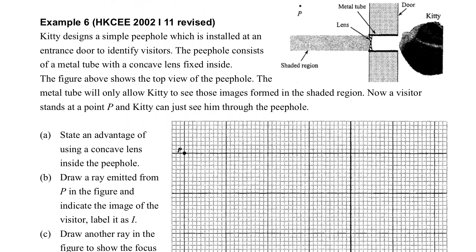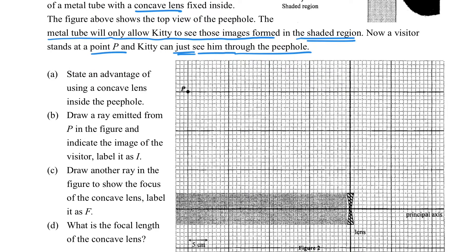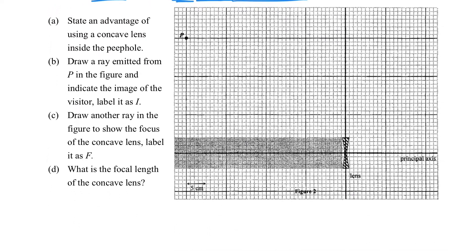And the last example here is an application of the peephole lens. When you look at the question like this, make sure you spend some time to read the question carefully so that you can know what is talking about here. You can see in the figure below there is a shaded area, which is the area we can able to see the image. And then the visitor from point P, Kitty has just seen him. This is also a hint for the next part.